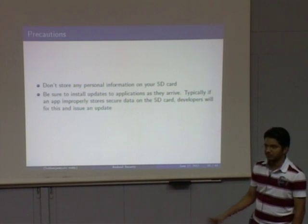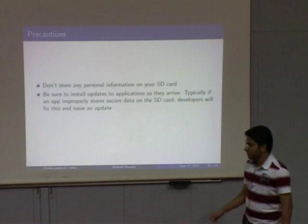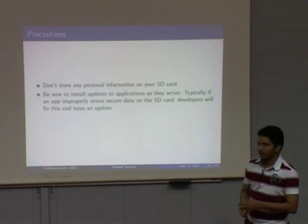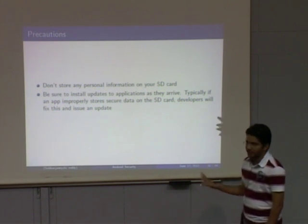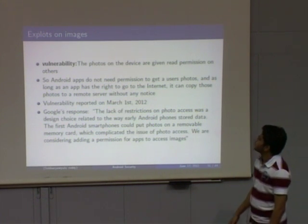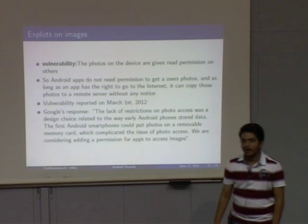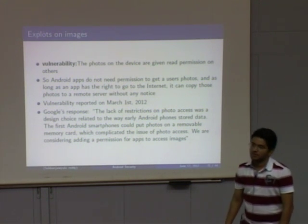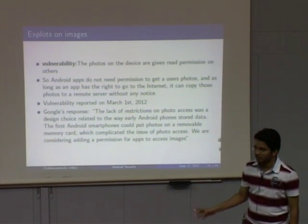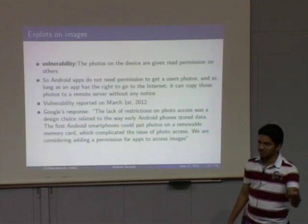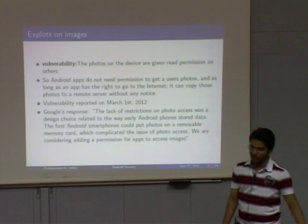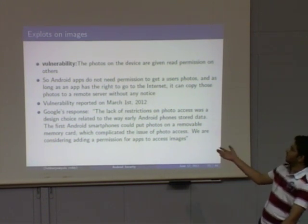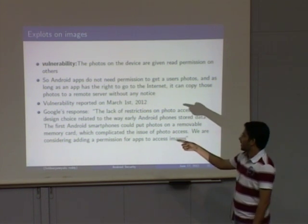One precaution is to not store personal information on the SD card, because any application can blindly read data there. Also, developers should install updates as they arrive — if an application writes important data to the SD card, developers may patch it in an update. Regarding images: in Android, images have read permission, so any application can read any images on the Android device. A malicious application could read all photos and send them to an attacker. Google acknowledged this and said photo accessing was a design choice, likely to be addressed in the next version.